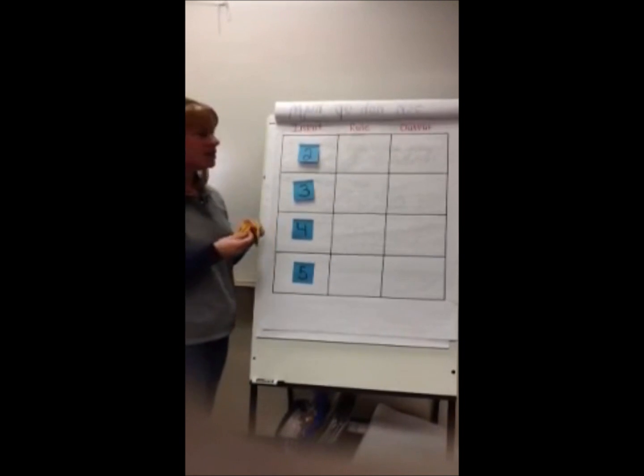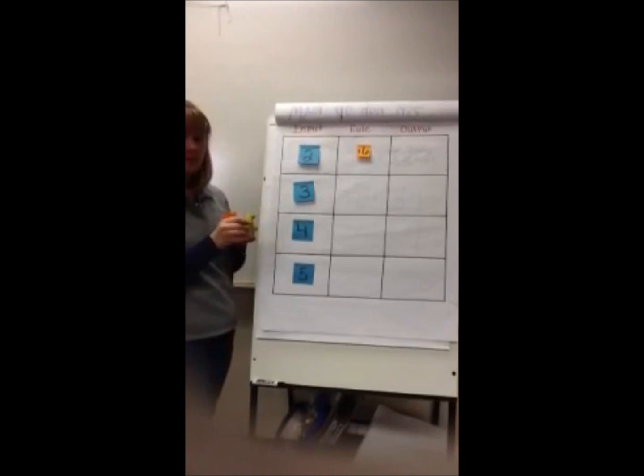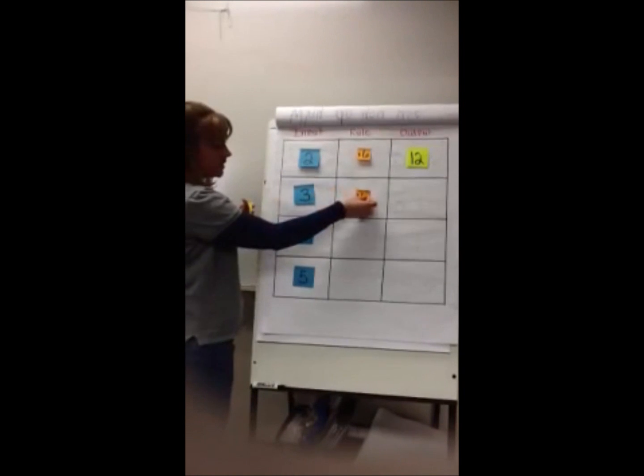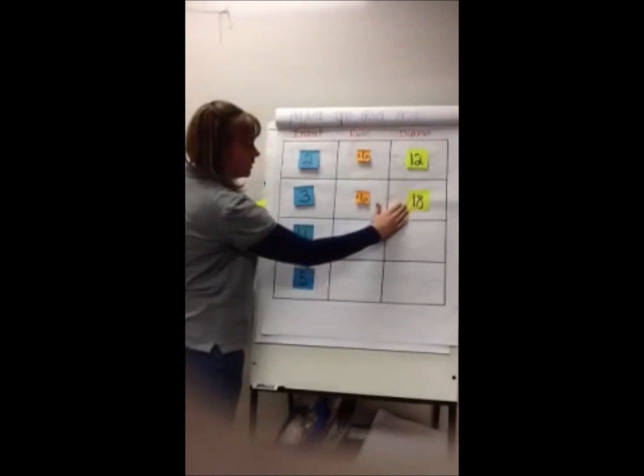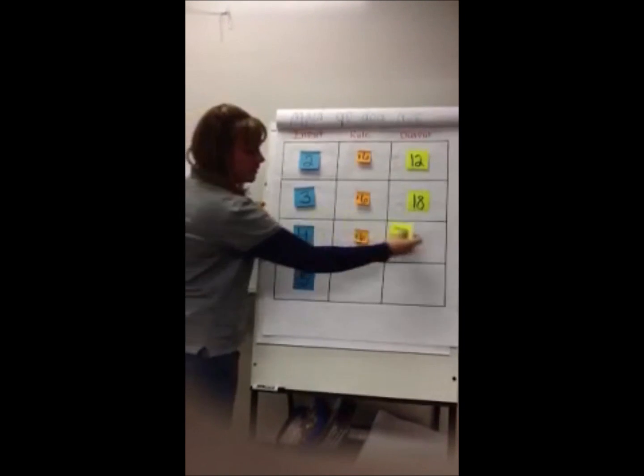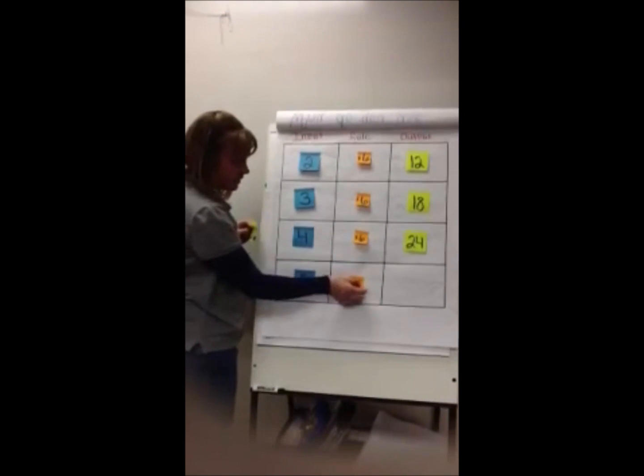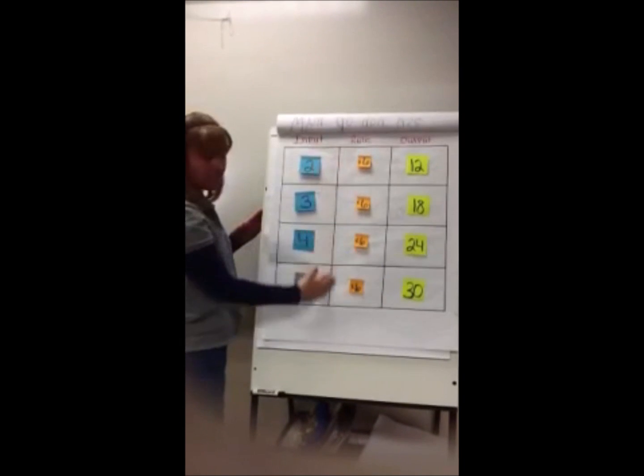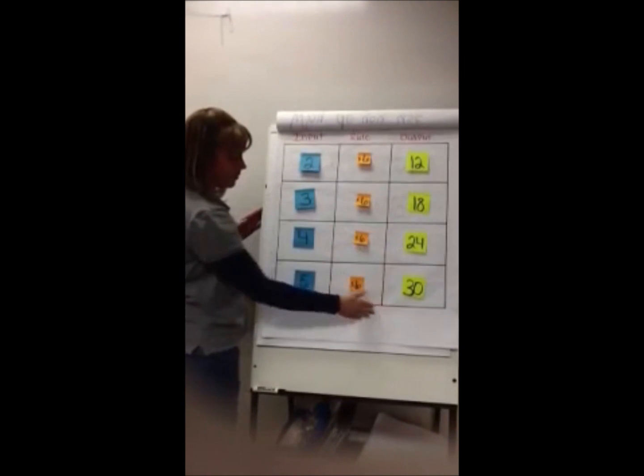We're going to do another multiplication, so we're going to have 2 times 6 is 12, 3 times 6 is 18, 4 times 6 is 24, and 5 times 6 is 30. And remember, the rule will always be the same. It will not change. We have our inputs and our outputs.